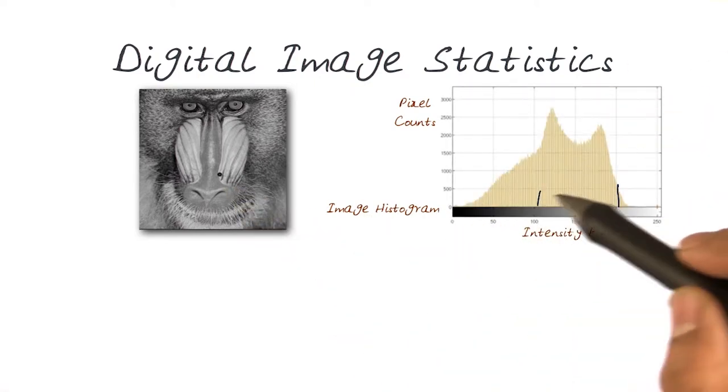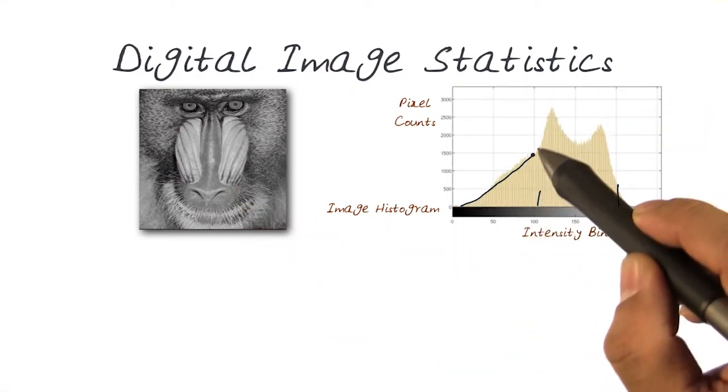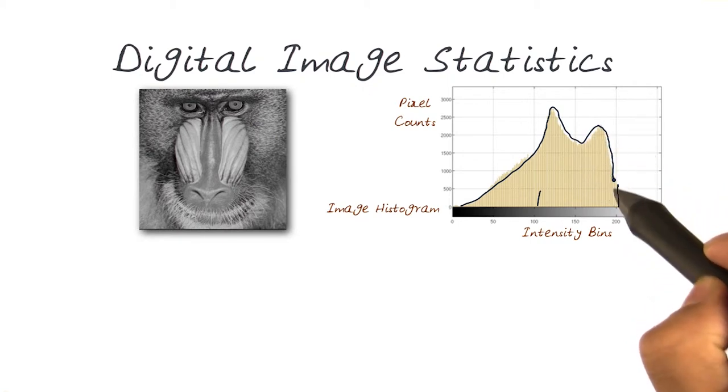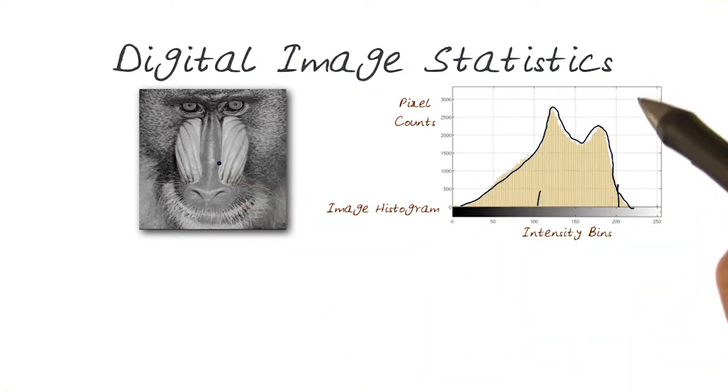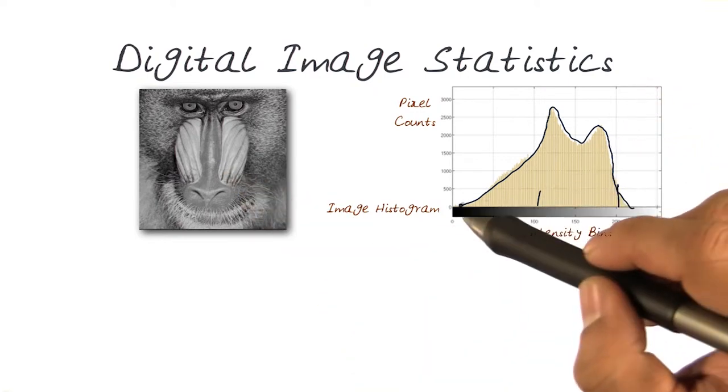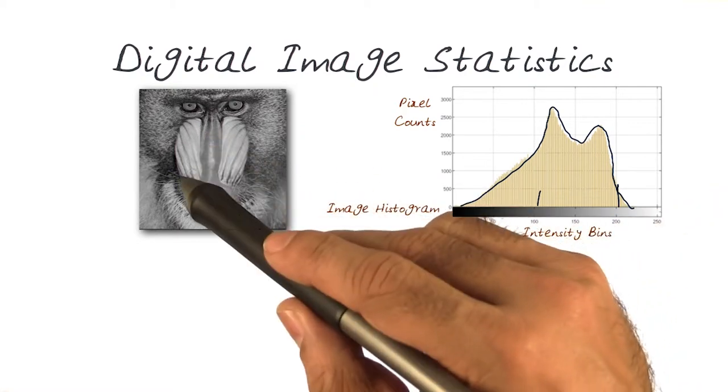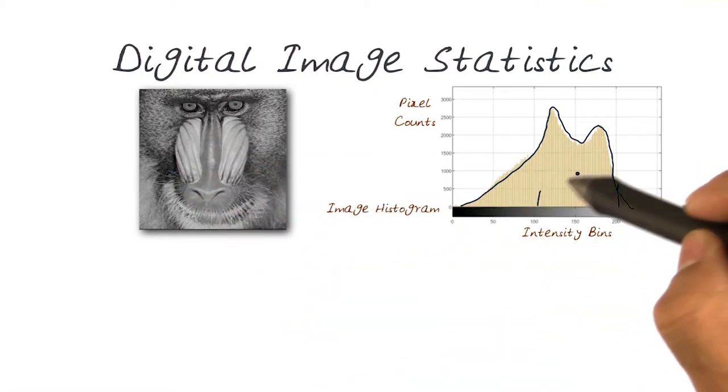This is what this image's histogram looks like - with a peak here, comes down and closes this way. Interestingly, there are not a lot of full white values here. If you look at this image, you can see that's true. There are a few zeros, dark values here, but most of the information is right in the middle.